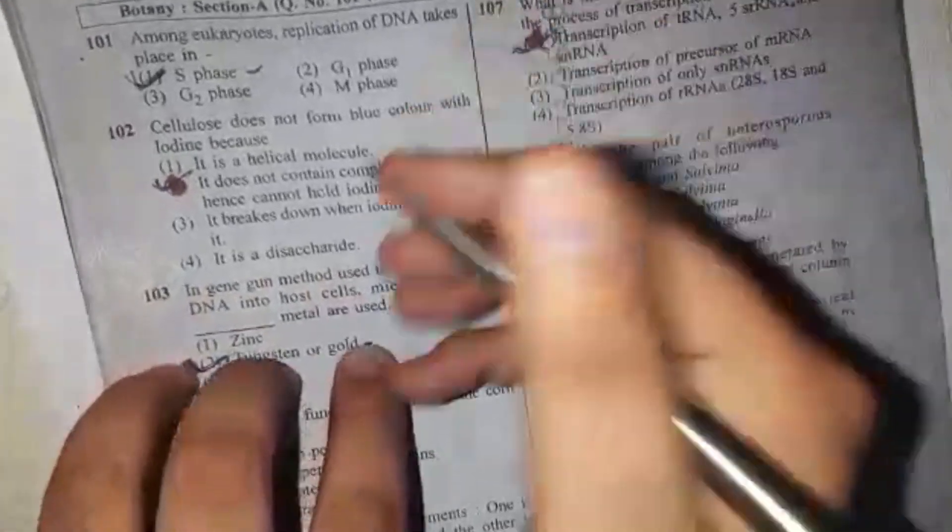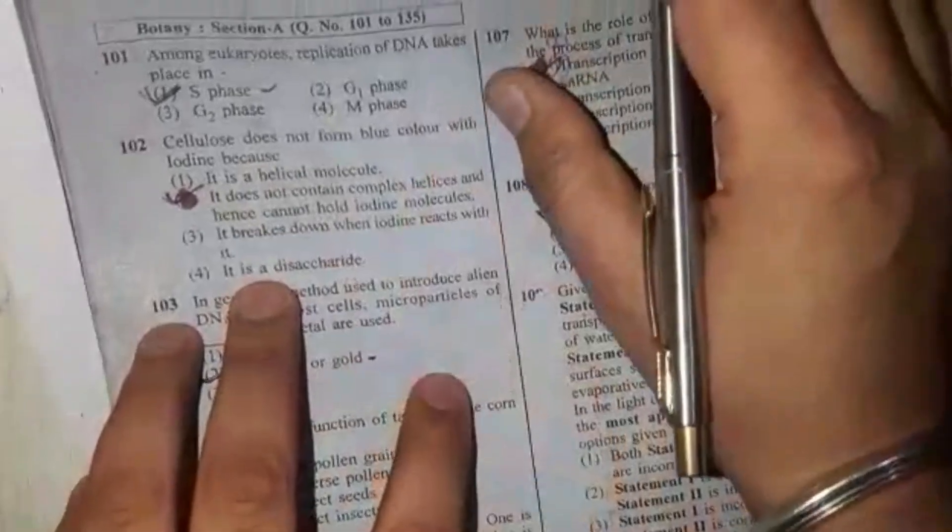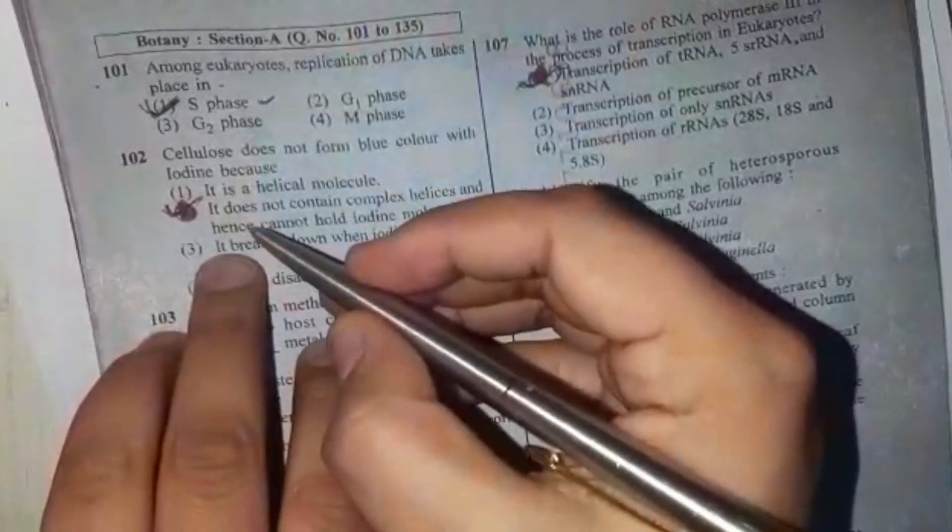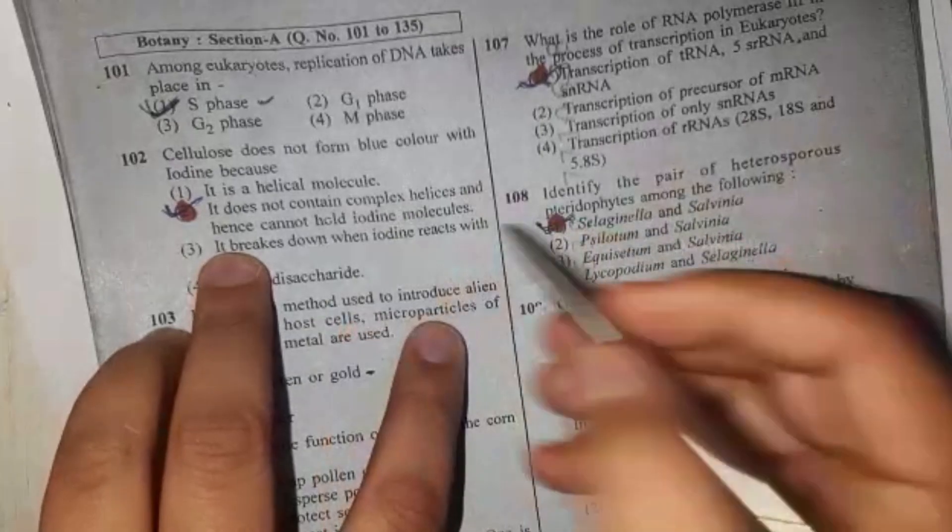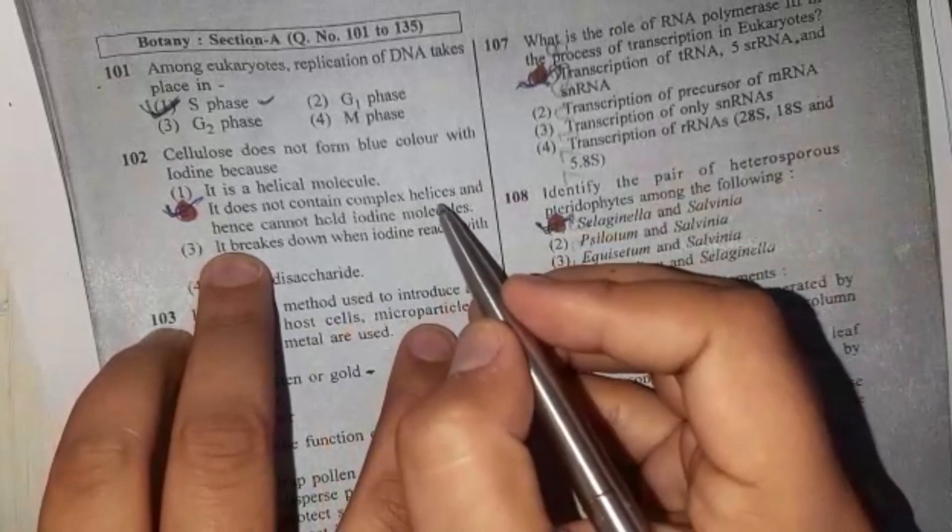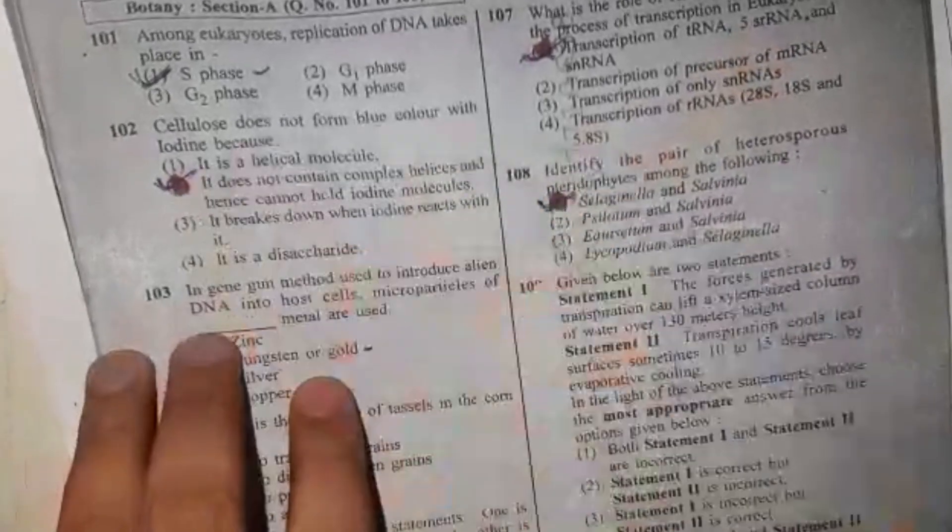Next question is: Cellulose does not form blue color with iodine because? The answer is because cellulose does not have complex helical structures which can hold iodine. So this answer is the second option.